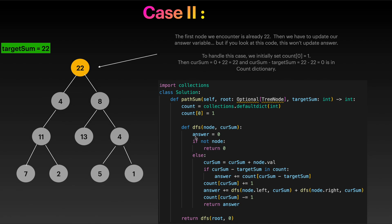One important thing: you have to initialize the answer variable to 0, otherwise the reference to answer is undefined. Then we update our count dictionary for the current sum key, incrementing it by 1. We run DFS for the left child and the right child, add the results, and add that to our answer variable.